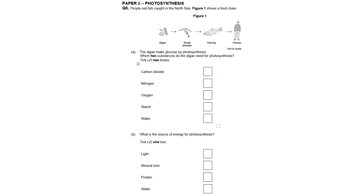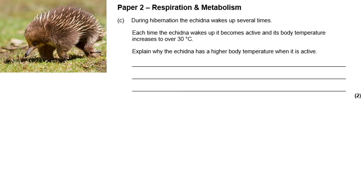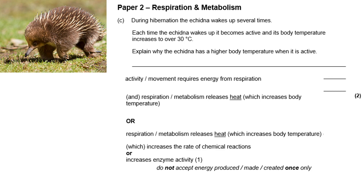And finally, another quick one. This is paper two and it's about photosynthesis. What two substances are needed by algae? Carbon dioxide and water. What is the source of energy? Light. And then the last one about respiration in the echidna — I think this was last year's or the year before. Explain why the echidna has a high body temperature when it's active. Remember, it's paper two, but it's got information about metabolism and respiration. So you can see there are two marks to be had there.